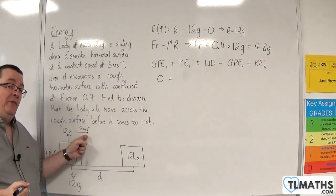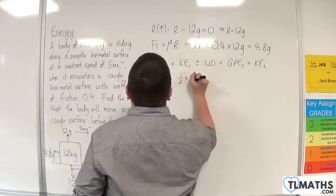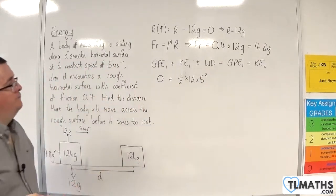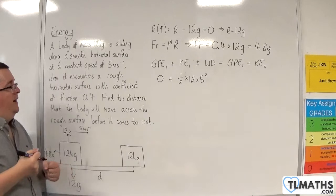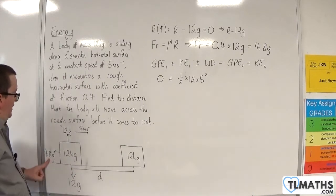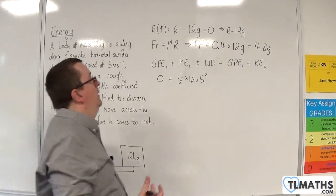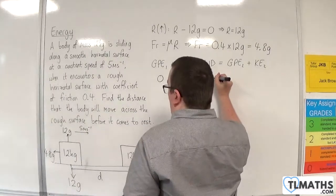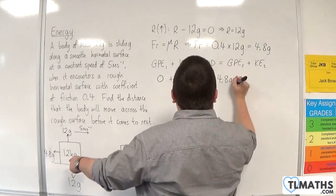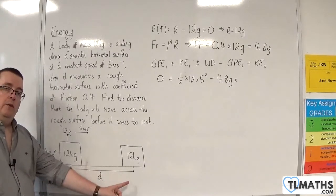Plus the initial kinetic energy. It's travelling at 5 metres per second initially, so that will be 1 half times M times V squared. Then we've got to consider the work done by forces acting horizontally. The only force acting horizontally is the frictional force, which is taking energy out of the system. So we're taking away 4.8g times the distance D.